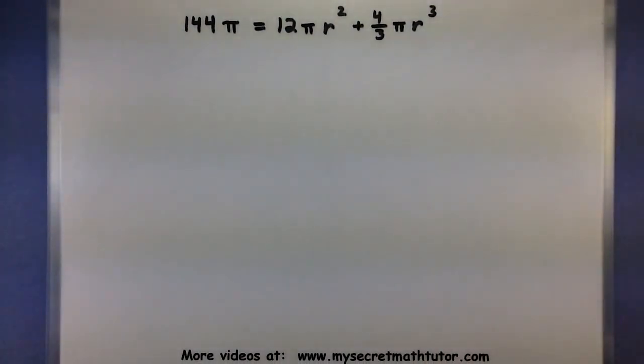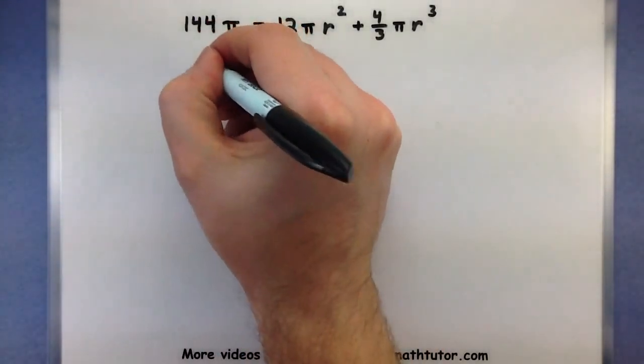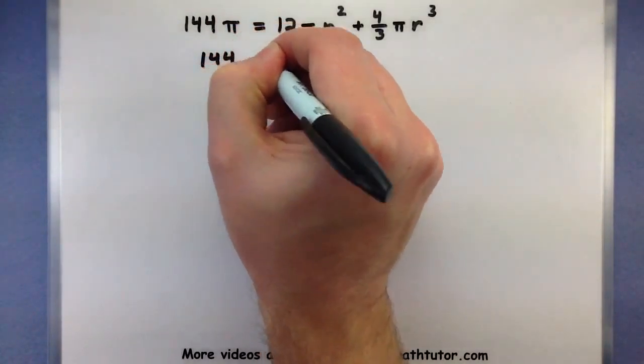So to solve this, basically I want to get everything over to one side and set it equal to zero. Then I can start factoring it and finding the zeros of that polynomial. Everything right now has a pi in it, so let's make it a little bit easier on ourselves by dividing everything by pi.